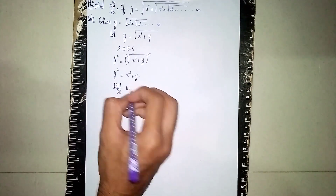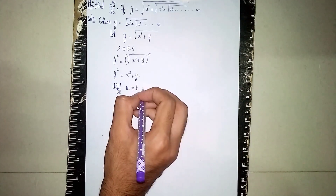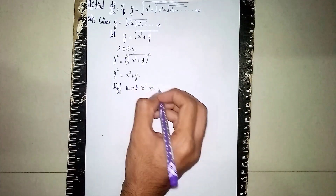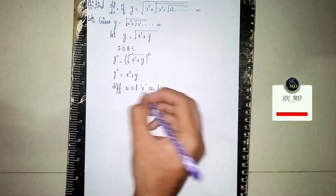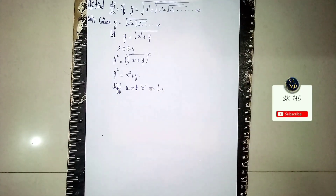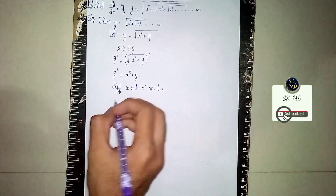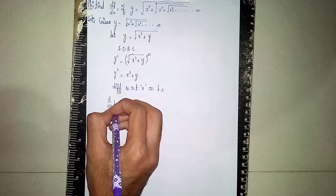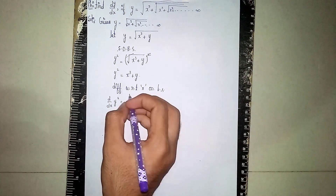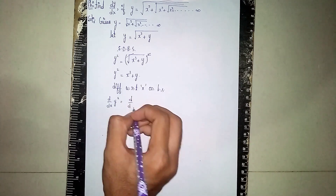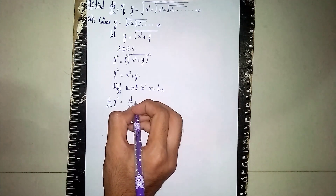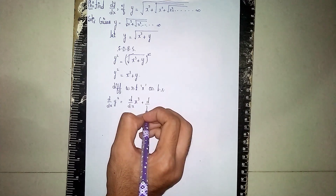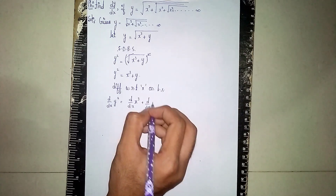Differentiating with respect to x on both sides: d/dx of y² = d/dx of x³ + d/dx of y.